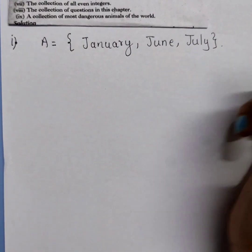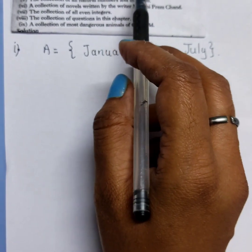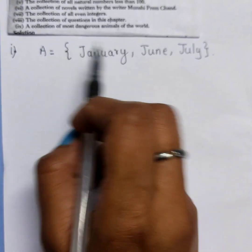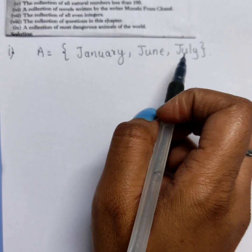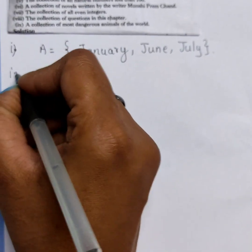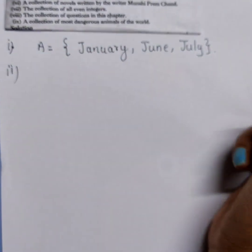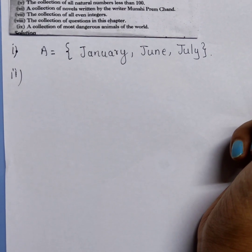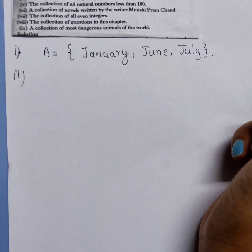The second question is the collection of 10 most talented writers of India. This is not a set because it may differ from person to person, so this is not well-defined, and hence this is not a set.